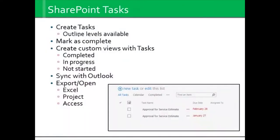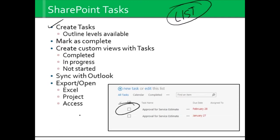Now we get to talk about SharePoint tasks. Tasks are just a list. I keep repeating lists because most people don't think of things like this as lists. But if you have the mindset of list, sort, and filter, you can do anything you want in SharePoint. You can create tasks and subtasks, mark them as complete, and assign them to others — that's the most amount of fun. Give that one to George. You can also create custom views with tasks — maybe a view that shows only when the status is complete, in progress, or not started.